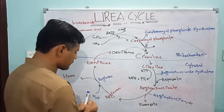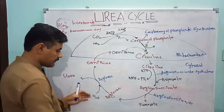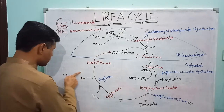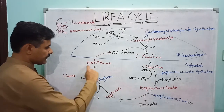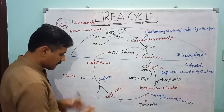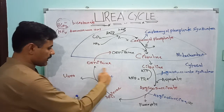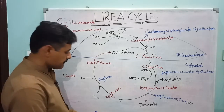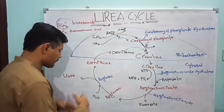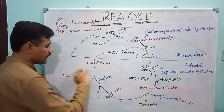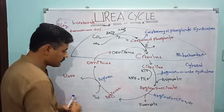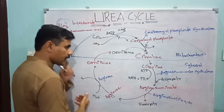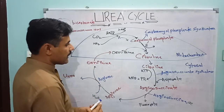In the last step, arginine, with the addition of water, breaks into two molecules: urea and ornithine. This is catalyzed by the enzyme arginase. Ornithine is then recycled back from the cytosol into the mitochondria, where it again reacts with carbamyl phosphate and continues the cycle.